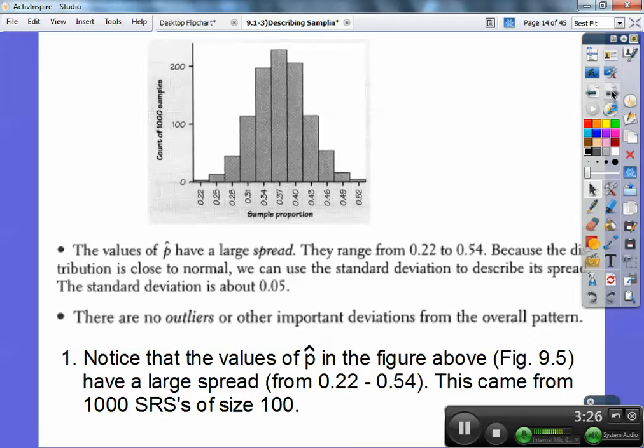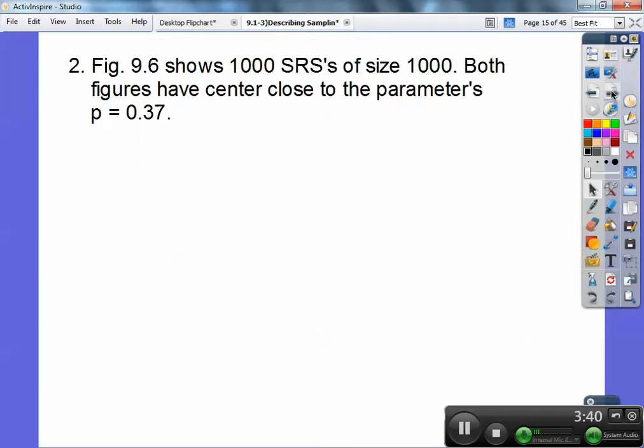There are no outliers or other important deviations from this overall pattern. It looks good. Notice that the value of P hat has a large spread from 22% to 54%. That's pretty large. This came from 1,000 SRSs of size 100. So we're going to increase this.